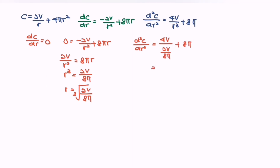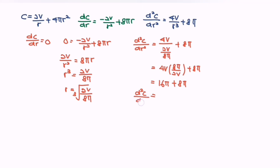Simplifying: 4V · 8π/(2V) + 8π = 16π + 8π = 24π. Since d²C/dr² = 24π > 0, this confirms that r is a minimum value.